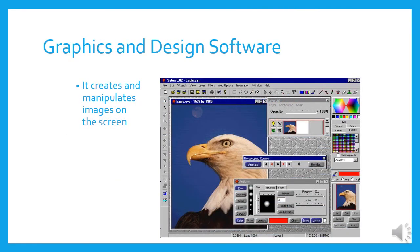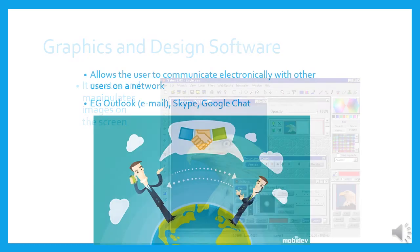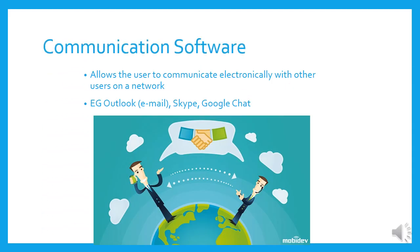Graphics and design software creates and manipulates images on the screen. There is a vast array of different graphics and design software available. You probably use Paint, which comes with Windows, but there are much more sophisticated ones available, such as Photoshop and all sorts of programs to edit photos. Communication software allows the user to communicate electronically with other users on a network — things like Outlook for emailing, Skype to talk live to other people on the internet, and Google Chat, which is quite similar to Skype.